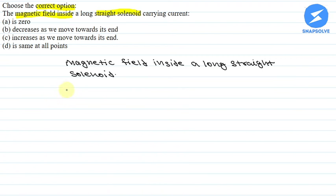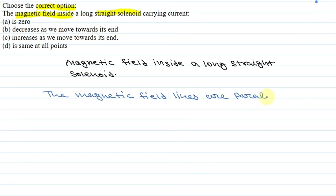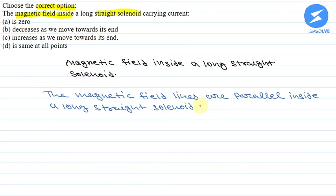In a long solenoid, the magnetic field lines are parallel to each other. And as the magnetic field lines are parallel, the magnetic field is same at all points. The magnetic field lines are parallel inside a long straight solenoid carrying current.